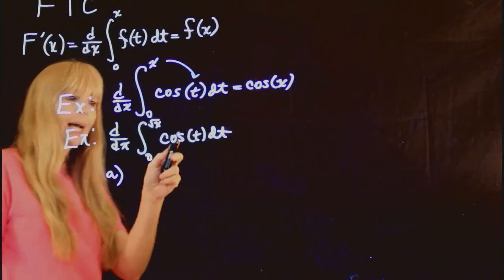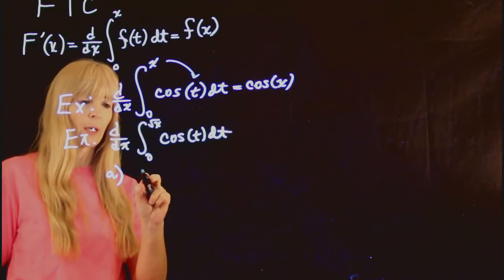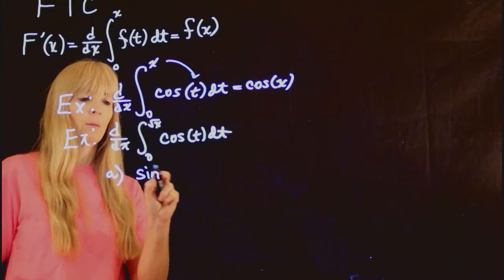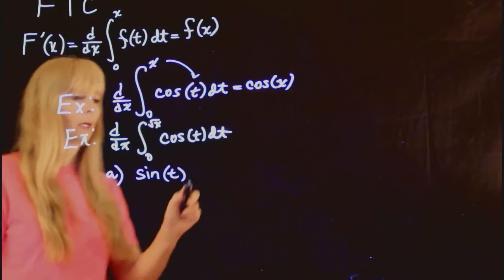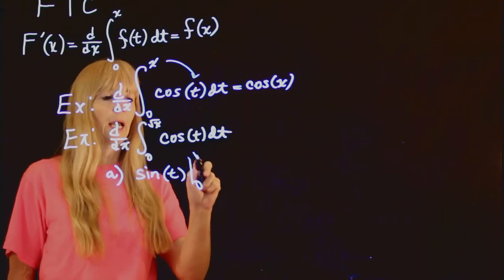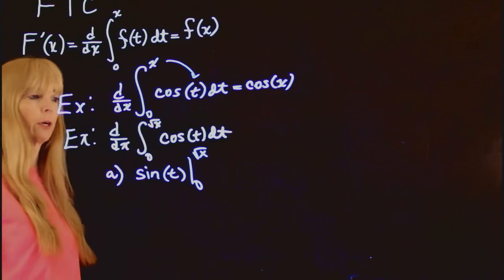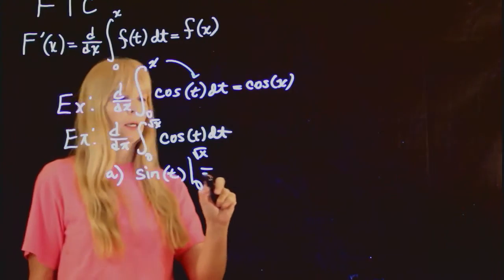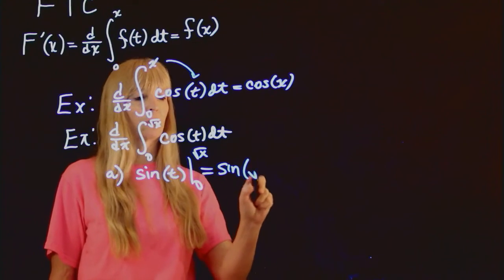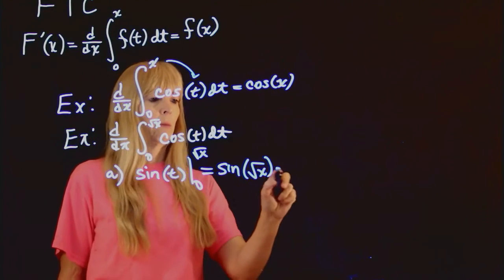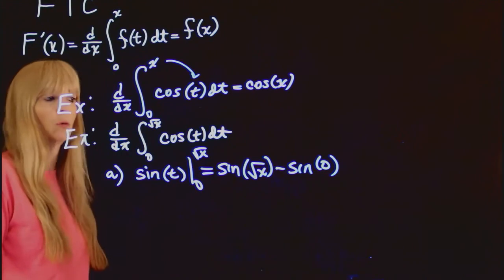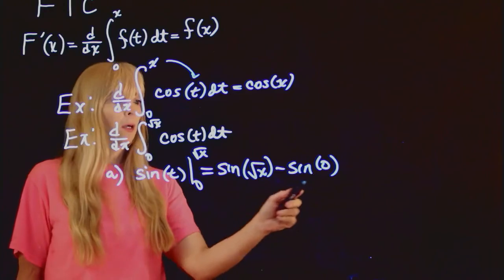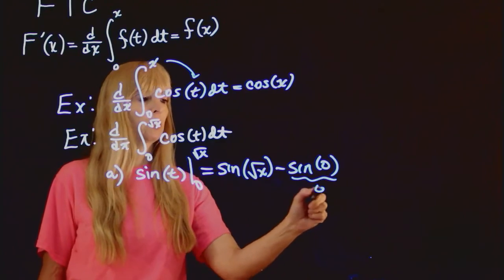I know that the antiderivative of cosine is sine because that's what it took to take the derivative of to get that. And then I evaluate it at my limits of integration. So that becomes sine of square root of x minus sine of 0, which of course sine of 0 is just 0. And from here, so this piece becomes 0.